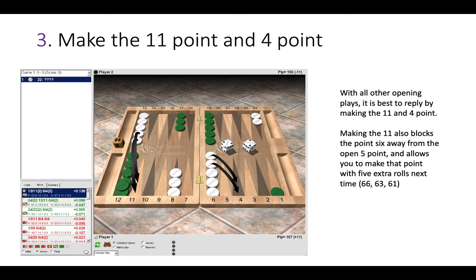Now the third rule is you make the 11 point and the 4 point. So with all other opening responses, it is better to just make the 11 and 4 point. You unstack two heavy points. Also making the 11 here blocks the 0.6 away from the open 5 point and will allow you to make that 5 point next time with five extra rolls, such as 6-6, 6-3 and 6-1.